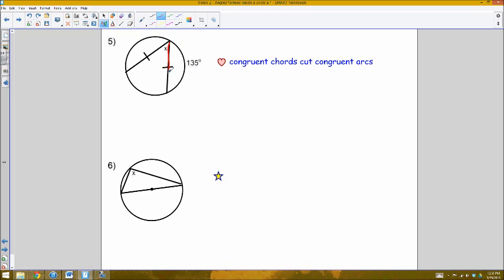In number 5, since this chord is congruent to this chord, the arcs that they cut will be congruent to each other using this theorem. So since this one is 135, this arc will also be 135 degrees.